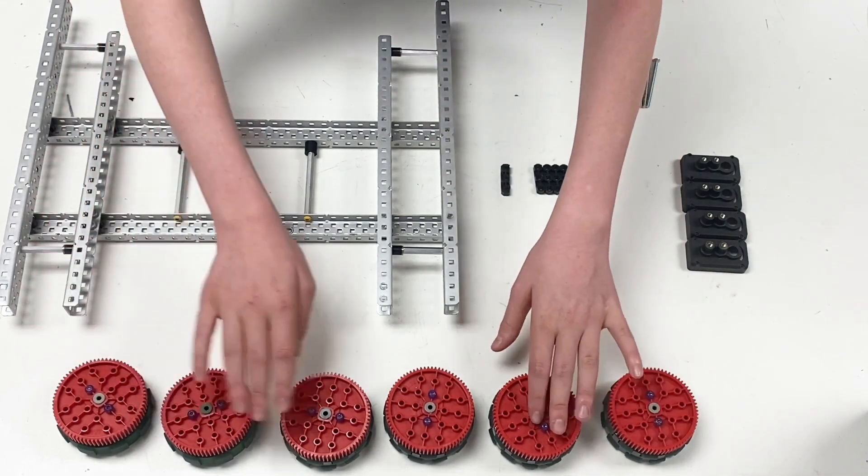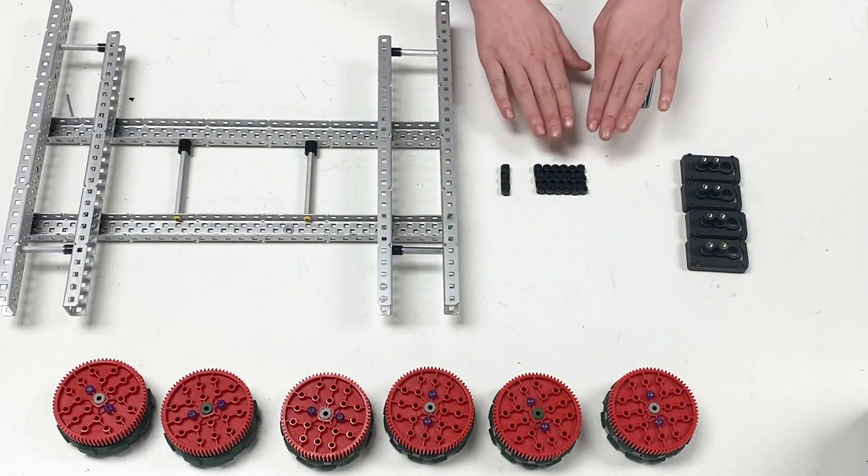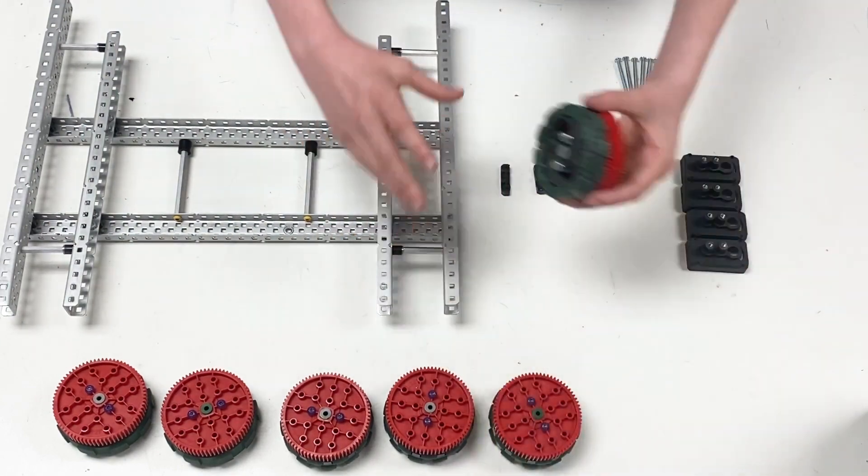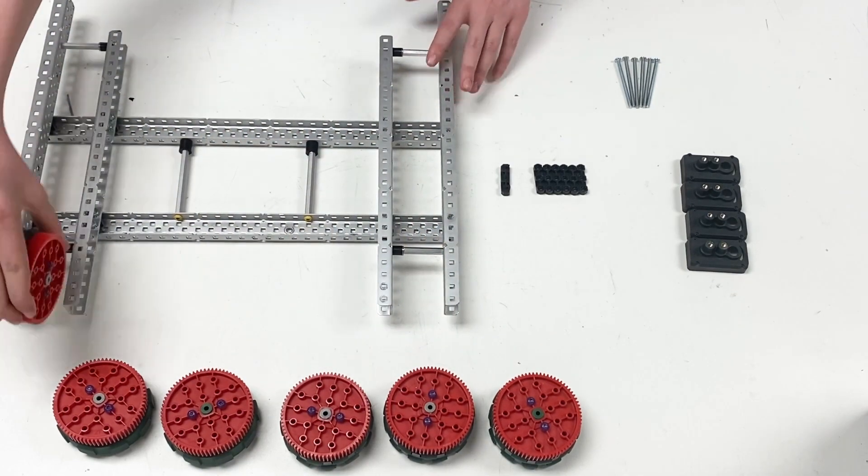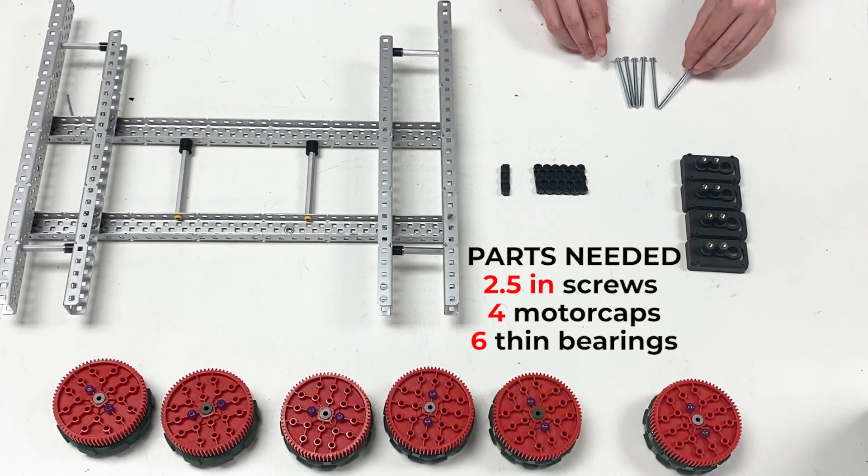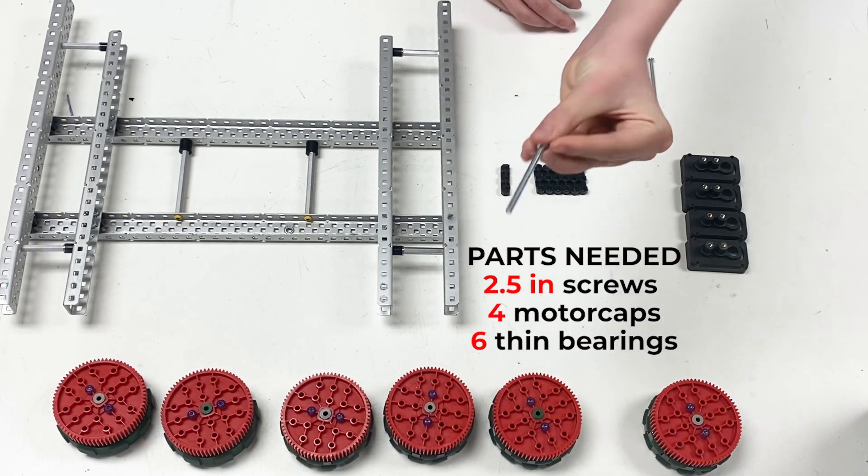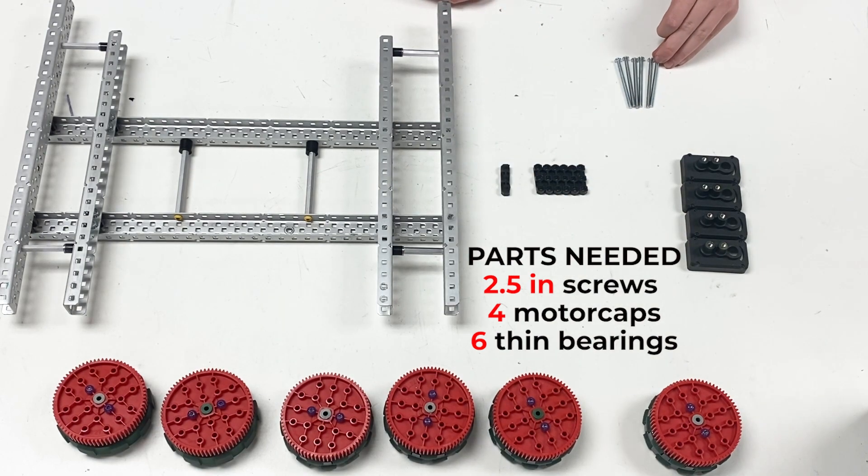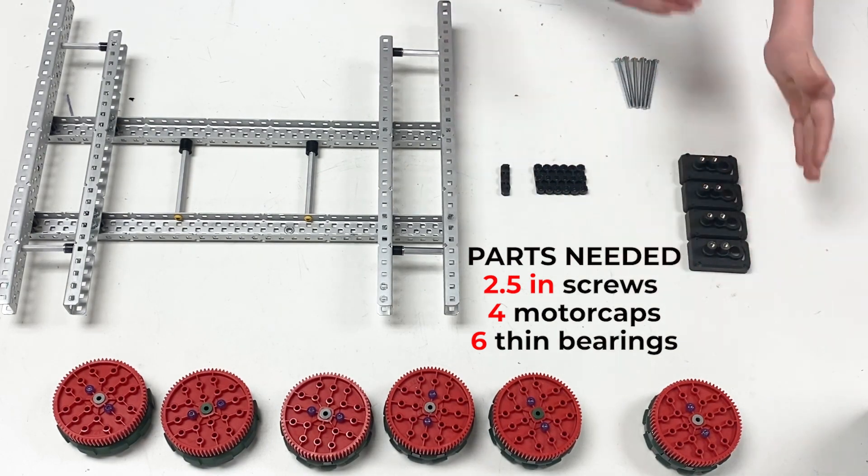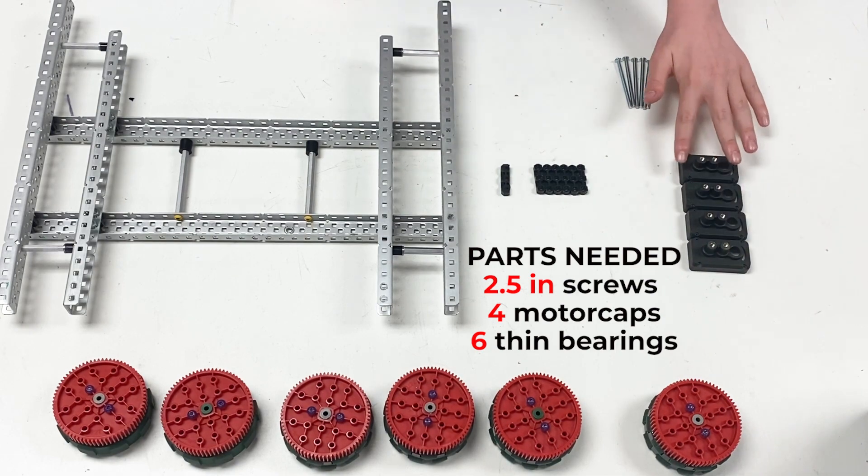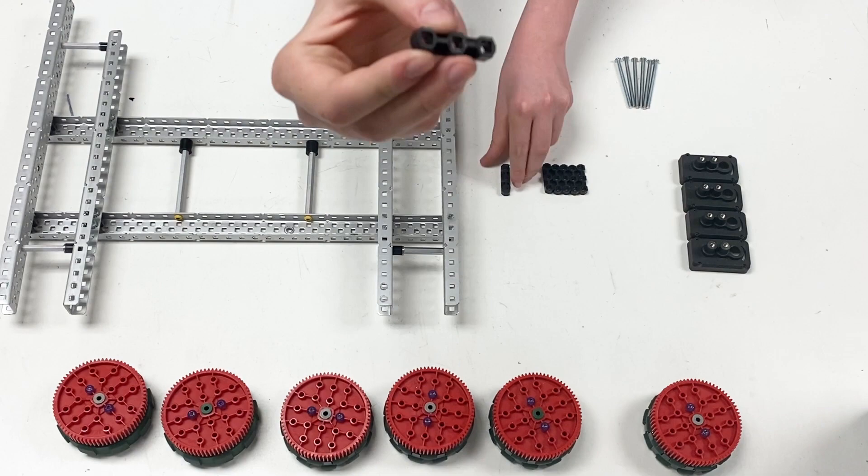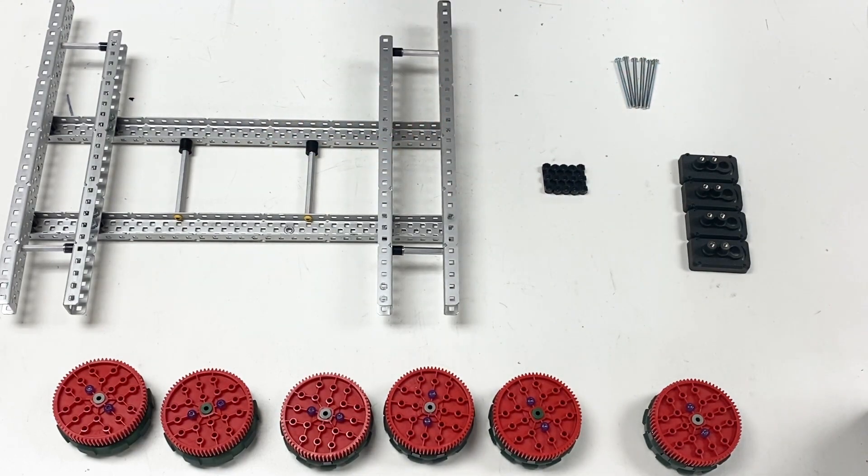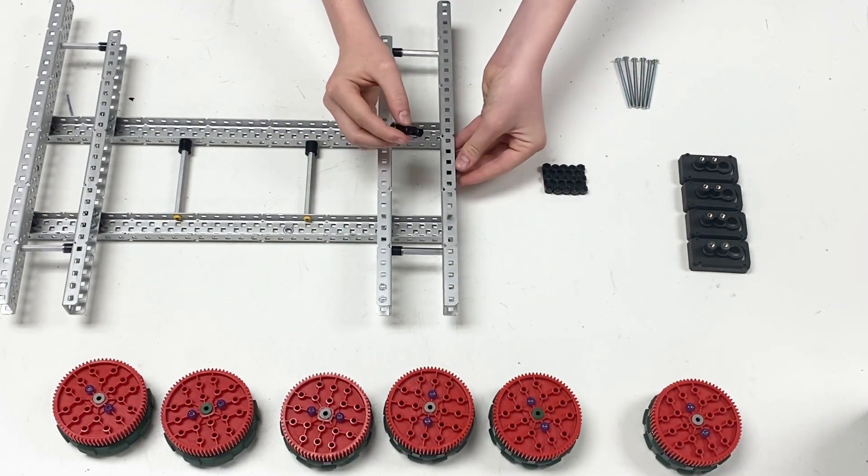Now that we have built all of the wheels, we are going to attach the wheels to the drive base. As you can see, they fit pretty nicely inside of here. The items that you're going to need are the 2.5 inch screws, the special screws that you had—you need six of those—your four motor caps for your four drive motors, and then you're going to need six either special bearings that are thinner or a regular bearing that is shaved on one side so that you can fit on the inside of a C-channel.